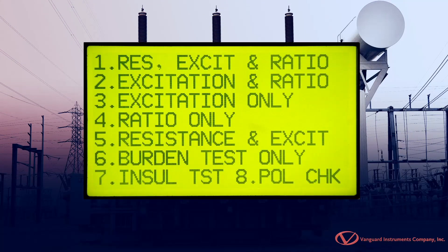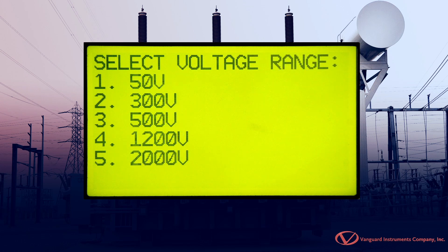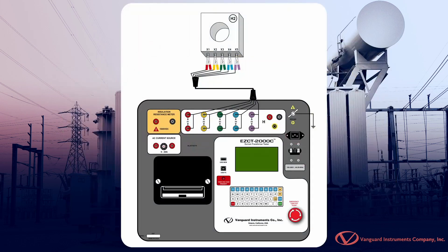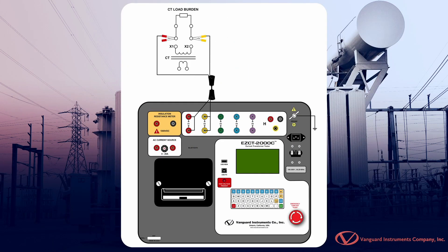The EZCT-2000C can perform excitation, current ratio, polarity, and phase angle tests. It also automatically demagnetizes the CT when performing excitation tests. The EZCT-2000C can also measure the insulation resistance of the CT's secondary winding as well as measure the CT's load burden.